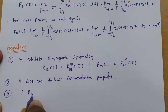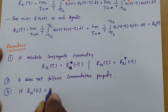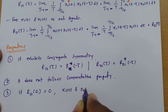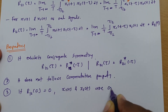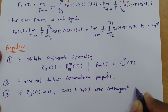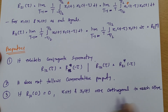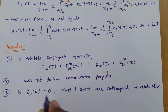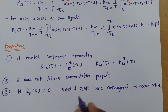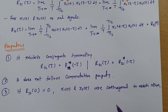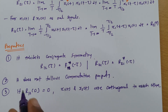The third property states that if R12(0) equals 0, then x1(t) and x2(t) are orthogonal to each other. So if R12(0) equals 0, we can say the two signals x1(t) and x2(t) are orthogonal. This same property is present in cross correlation for energy signal.